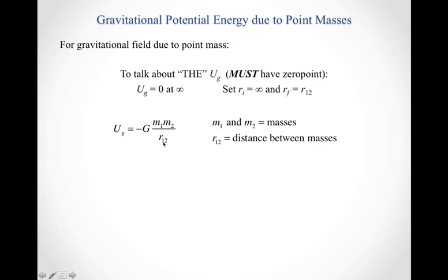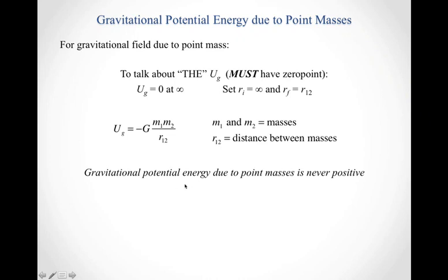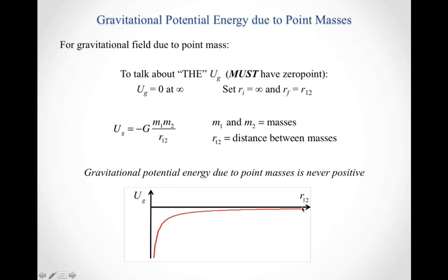R_12 here is the distance between masses 1 and 2. Since big G, M1, and M2 are all positive, the gravitational potential energy is never positive. It can be zero when your masses are infinitely far apart, but for any finite distance you'll have a negatively valued gravitational potential energy. And the closer they get together, the more negative that gravitational potential energy becomes.